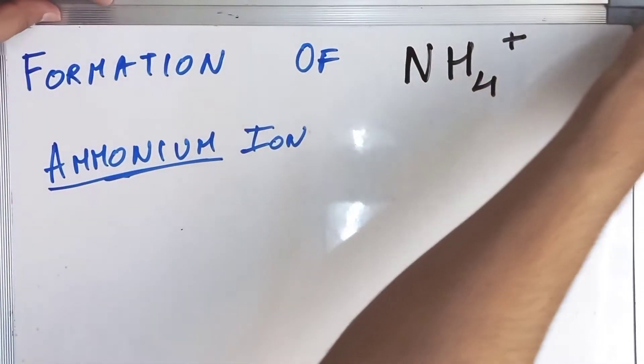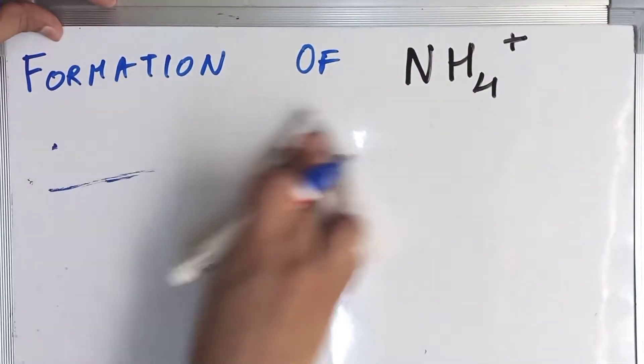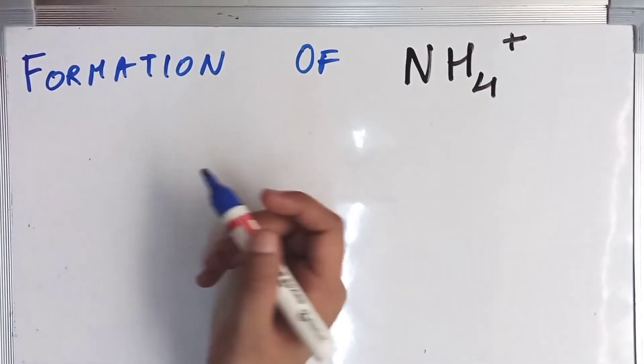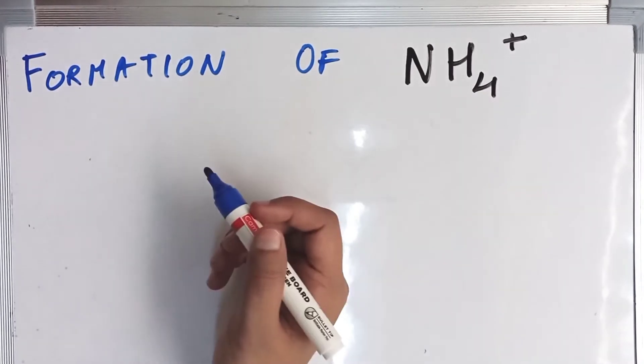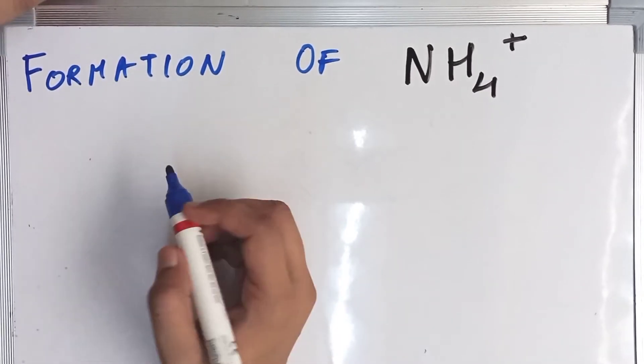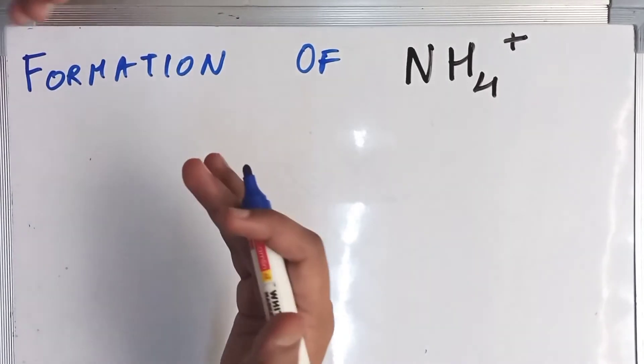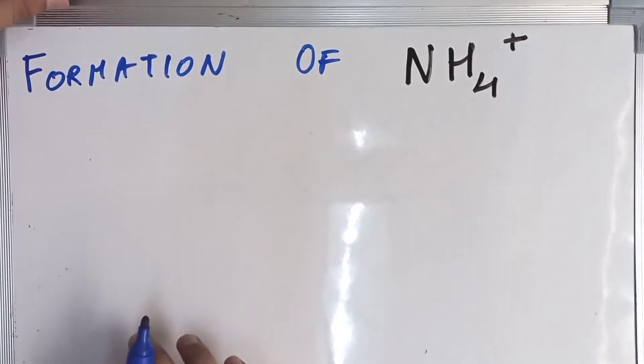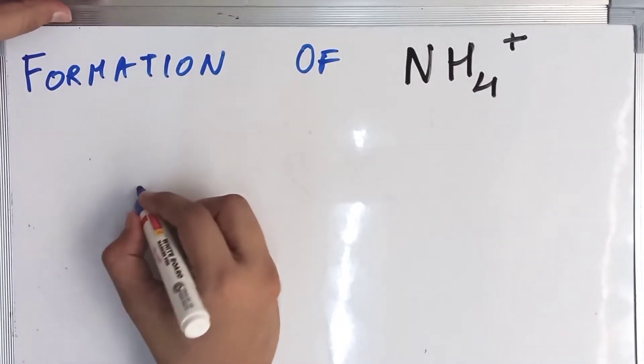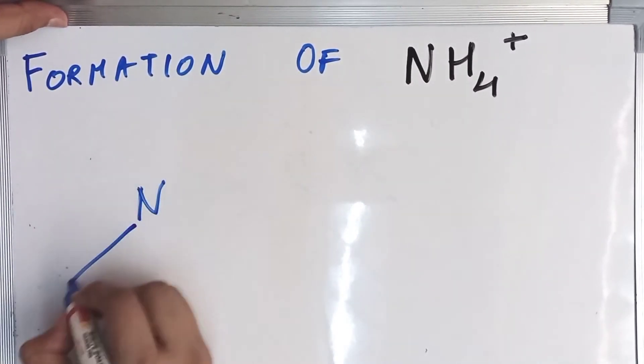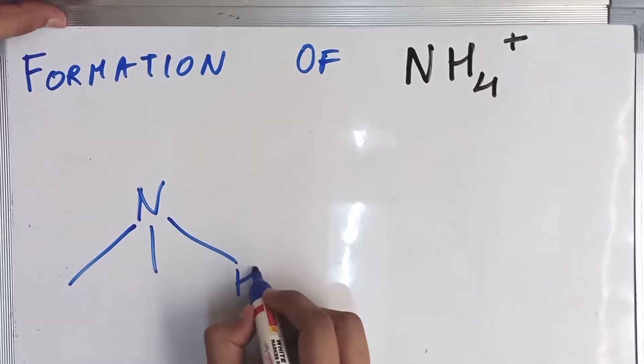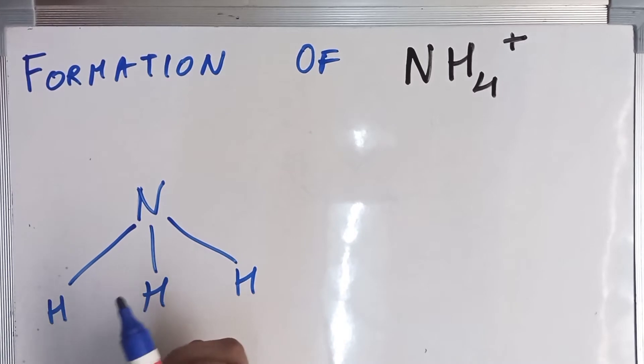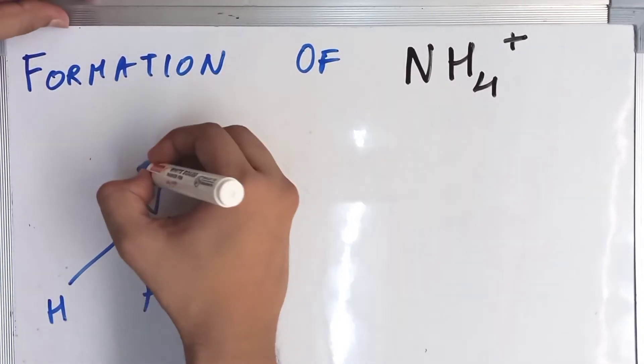Let's begin. We're going to draw the structure of NH3 ammonia molecule. You guys must be knowing that nitrogen makes three bonds. I mean, it makes four bonds, but the fourth bond is a coordinate bond. In normal circumstances it makes three bonds.